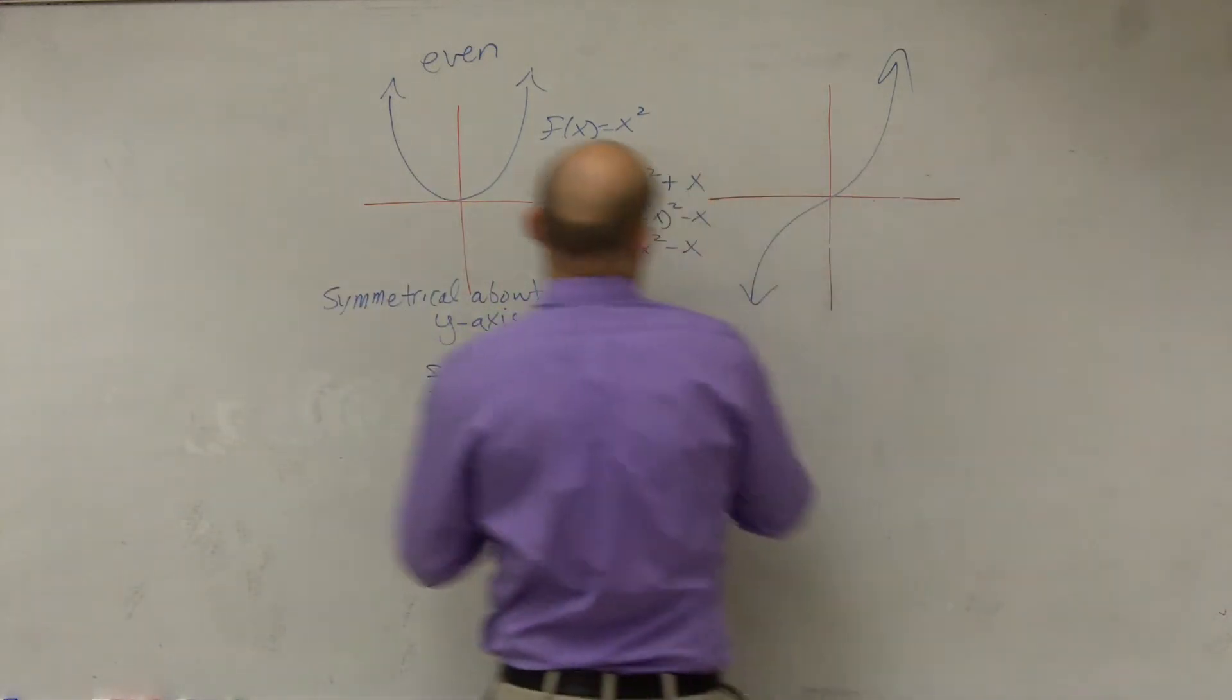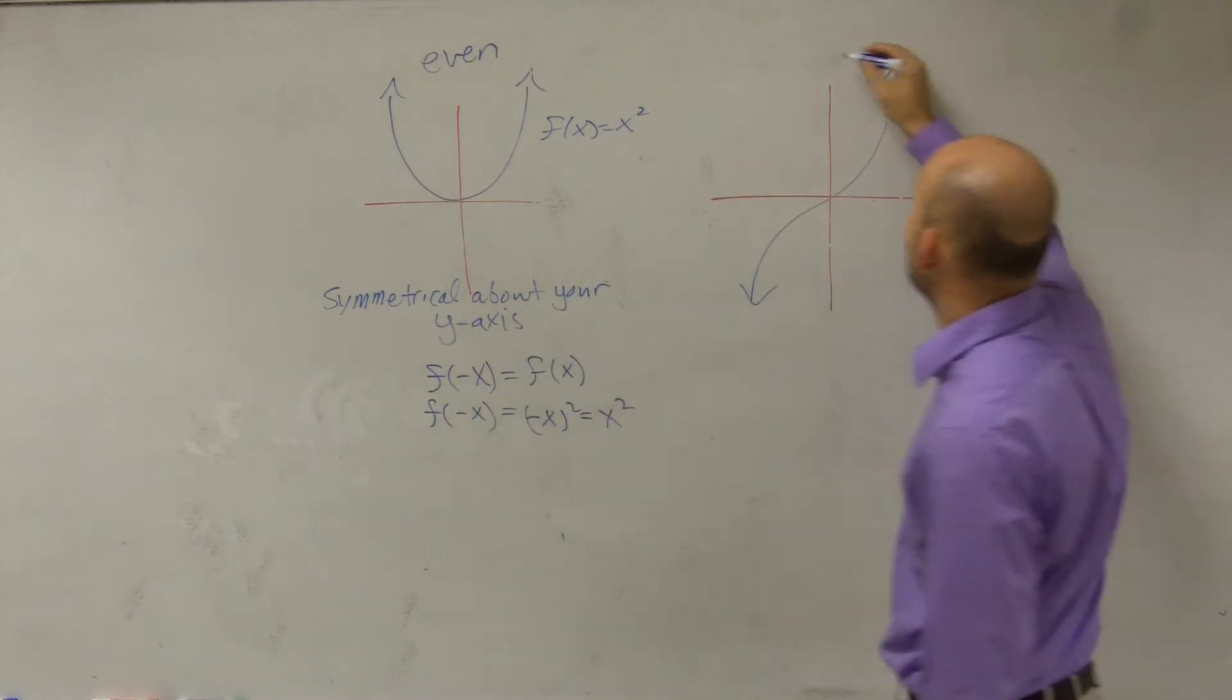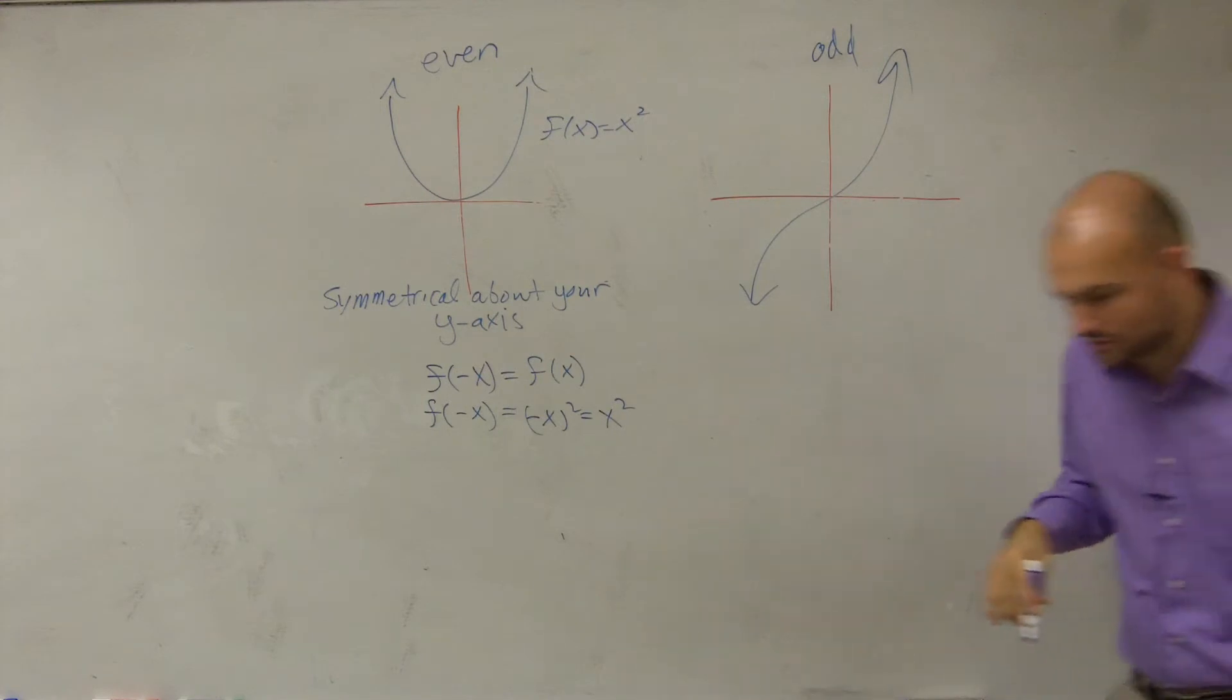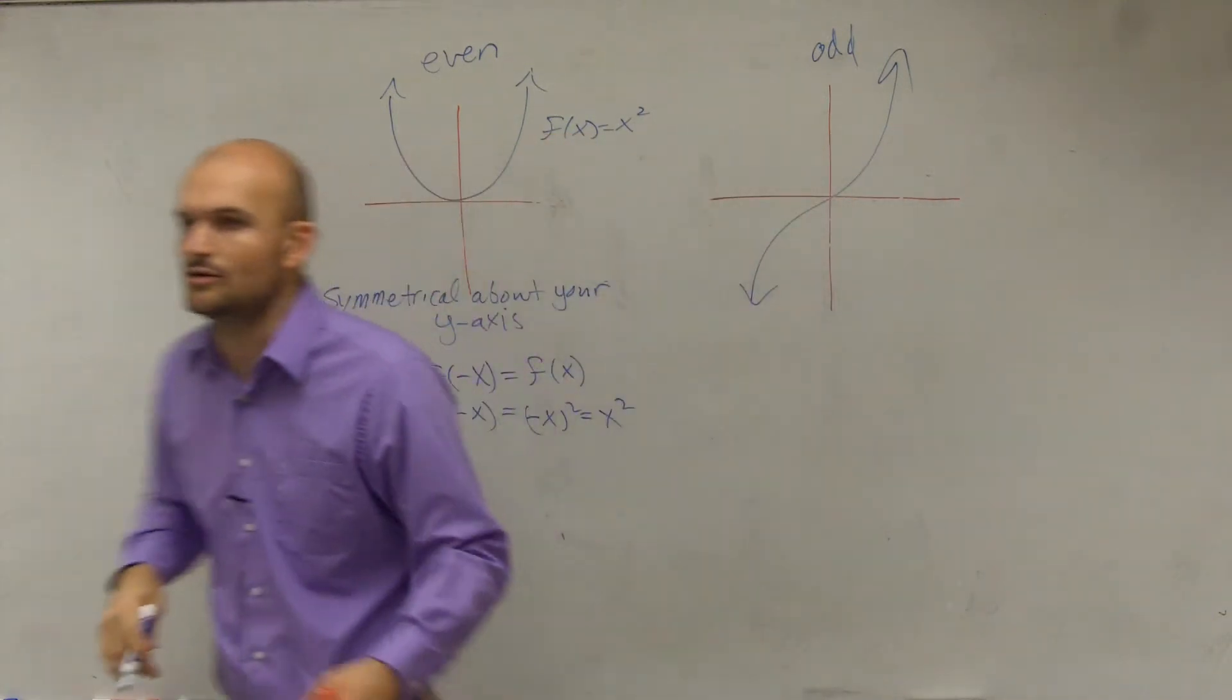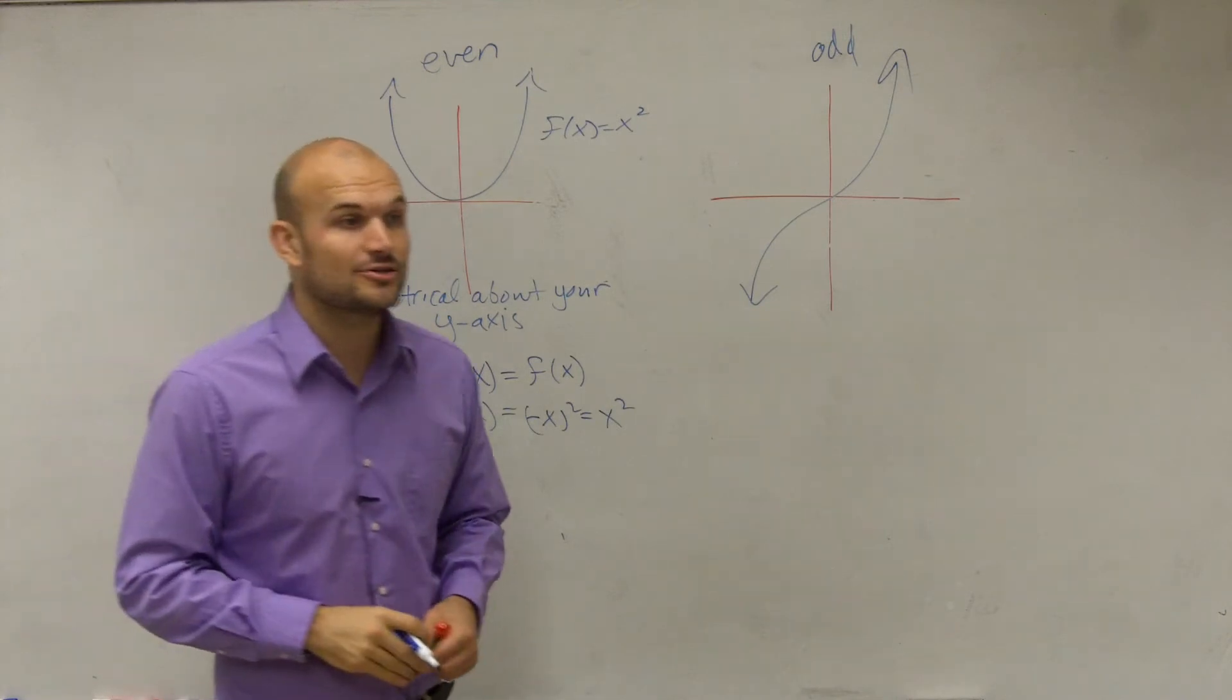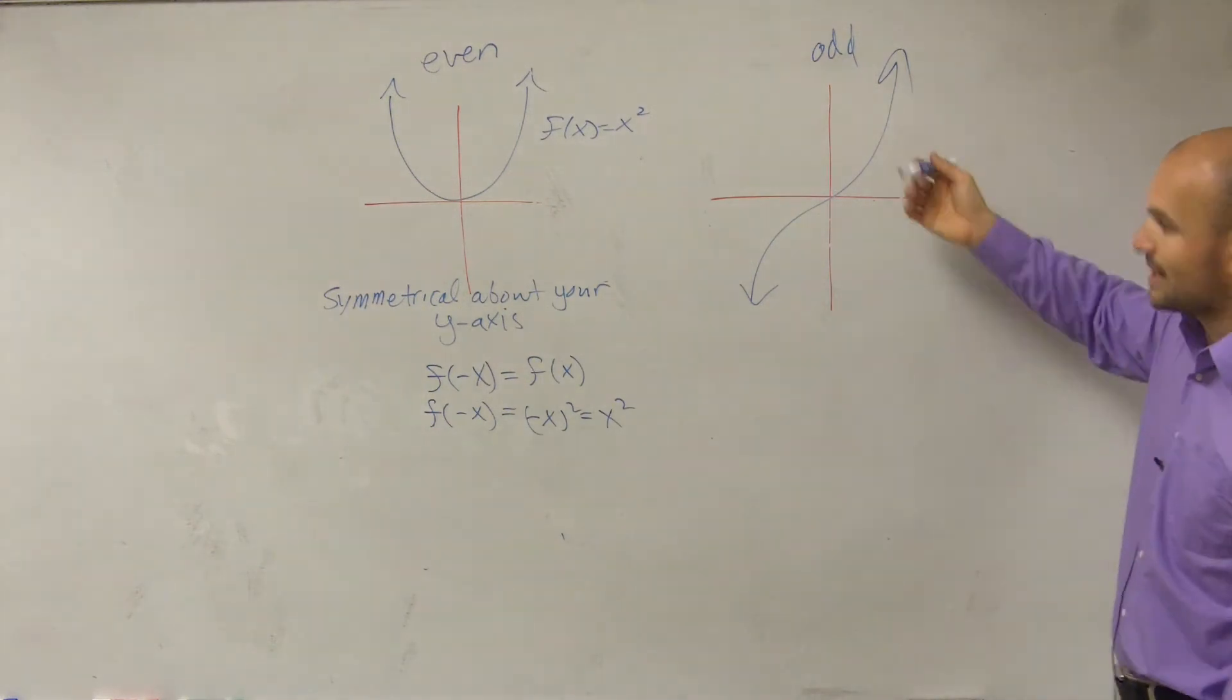Now, let's look at this, which is what we call an odd function. And the reason why it's an odd function is it's symmetrical. Does anybody know what that graph is symmetrical about? Very good. It's symmetrical about your x and your y-axis, or what we call our origin.